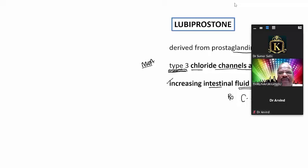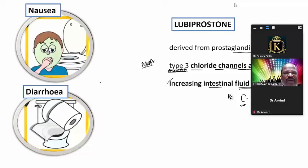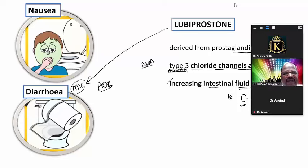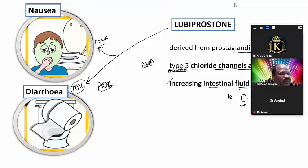Another important secretagogue is lubiprostone. It is a derivative of prostaglandin E1 and acts as a type 3 chloride channel activator. By increasing intestinal fluid secretion, it promotes bowel motility and is useful for constipation-dominant IBS. Common adverse effects include nausea and diarrhea.